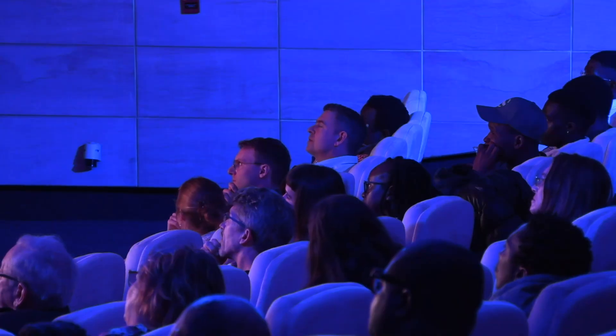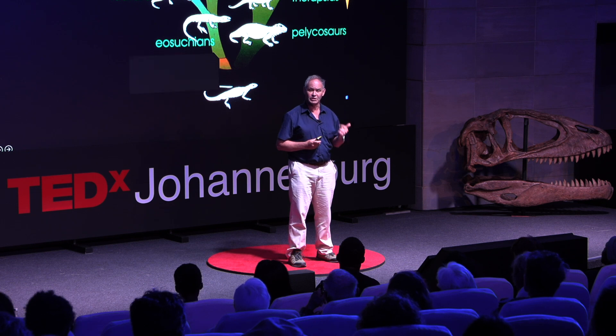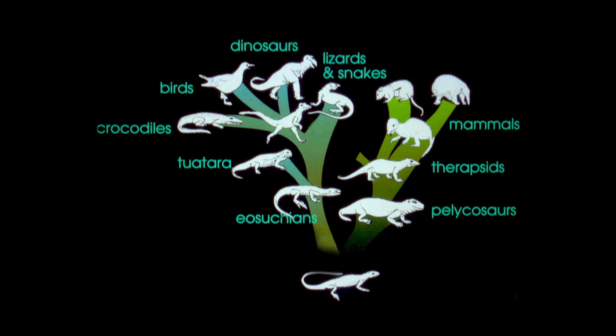300 million years ago, reptiles had just appeared on earth. Up until then, the only animals with backbones were fishes and amphibians. Just over 300 million years ago, reptiles appeared and diversified into two directions: one direction giving rise to dinosaurs, lizards, and snakes, and the other giving rise to mammals.